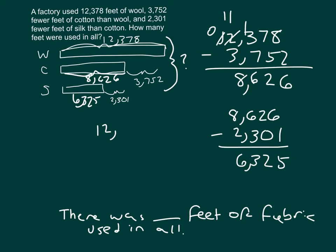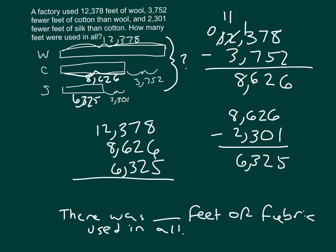We'll carefully write out those numbers and add them all together. In the ones: 8 plus 6 is 14, plus 5 is 19 — write 9, regroup 1. Next column: 1 and 7 is 8, plus 2 is 10, plus 2 is 12 — write 2, regroup 1. That gives 13 in the next column, then 17, and in the ten-thousands place 1 plus 1 equals 2. So there were 27,329 feet of fabric used in all.